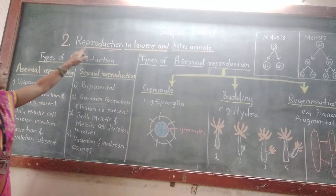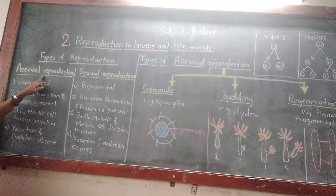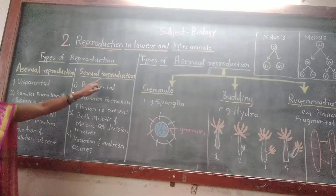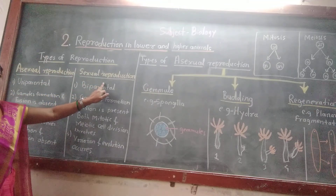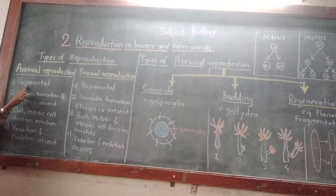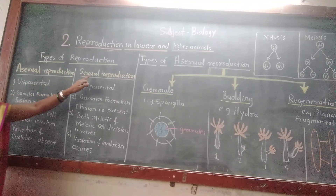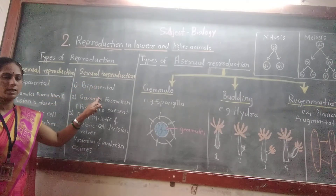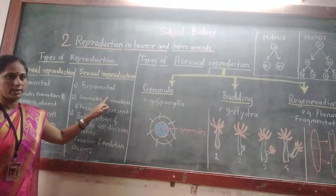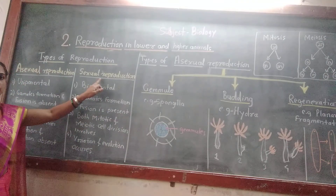What are the different types of reproduction? One is asexual reproduction and the second is sexual reproduction. In asexual reproduction, only one parent is required, so it is called uniparental reproduction. In sexual reproduction, both parents are required, so it is called bi-parental reproduction. It is also called amphimixes.